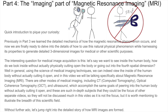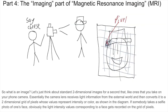Without further ado, let's jump right into the detailed story of how MRI images are formed. So what is an image? Let's just think about standard two-dimensional images for a second, like the ones that you take on your phone camera. Essentially, the camera lens receives light information from the external world and then converts it to a two-dimensional grid of pixels whose values represent intensity of color, as shown in the diagram. If somebody takes a selfie photo of one's face, obviously the light intensity values corresponding to a face get recorded on the grid of pixels.